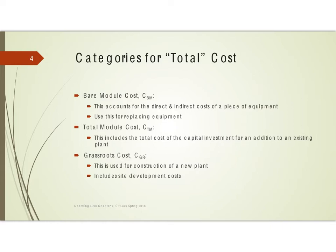We've discussed this in a previous lesson, but let's review. There are some categories we use for talking about what the total cost is going to be. A bare module cost simply means you're going to buy the equipment and install it without a lot of extra engineering fees or extra utilities — that's the bare module cost, and it's basically used when you're simply replacing equipment. A total module cost is a more substantial addition to a facility, but you are at an existing plant so you have all of the infrastructure you need, though you may need to put in additional pipe racks and things like that.